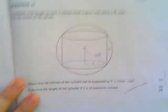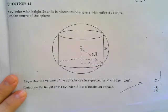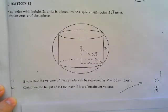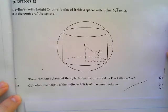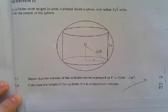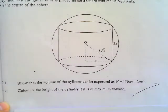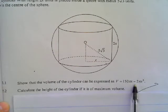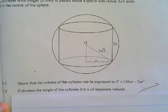The next question, which I've prepared for you, is the following one. A cylinder with a height of 2x units is placed inside a sphere with a radius of 5√3 units. O is the center of the sphere. Number 1. You're all happy with the picture, first of all. Number 1. Show that the volume of the cylinder can be expressed as V = 150πx - 2πx³.